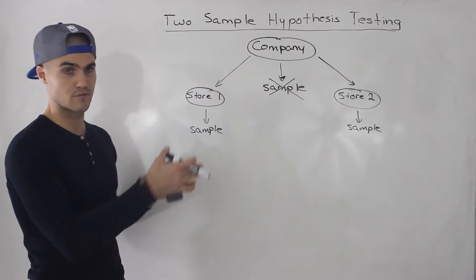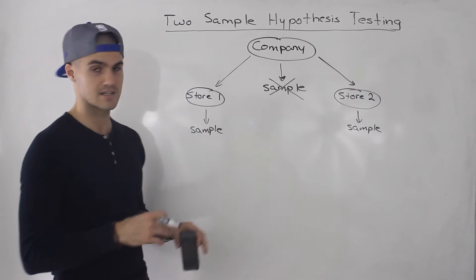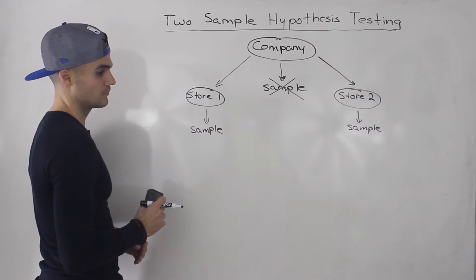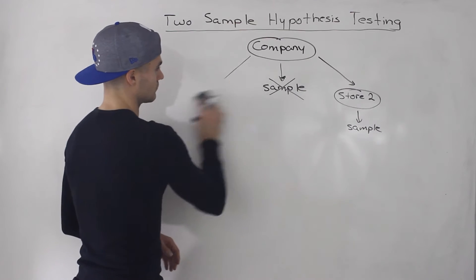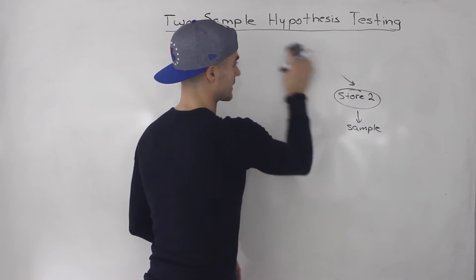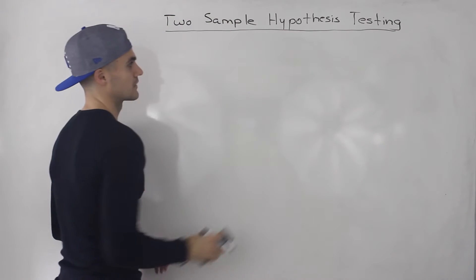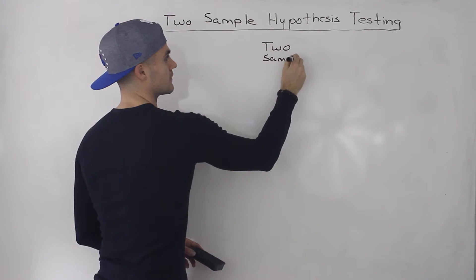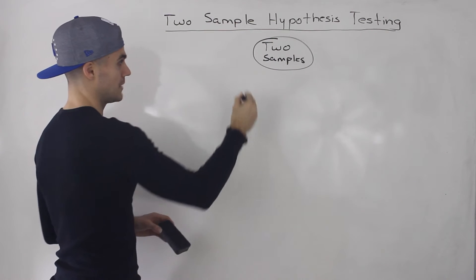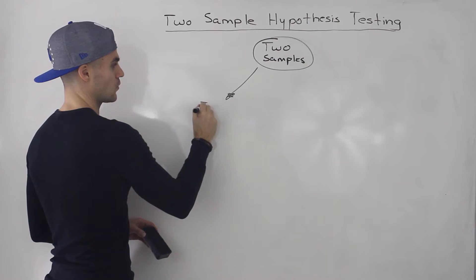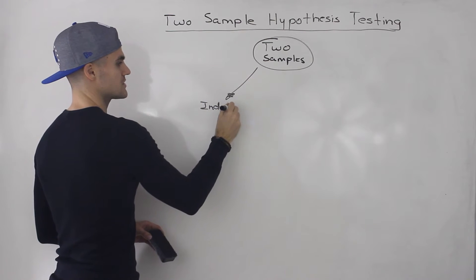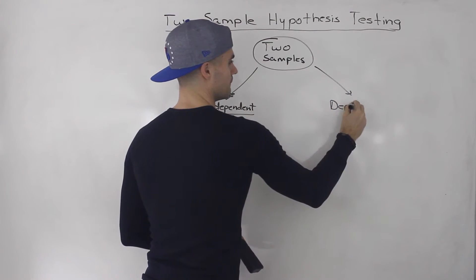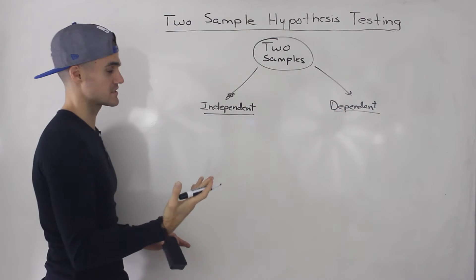That's just a high-level example of how we'll be using two-sample hypothesis testing. We're going to get more technical, but I want to start at a higher level before going further. In the next few videos, we'll be taking our two samples and making a further distinction about them — specifically, whether the two samples are independent or dependent, which will affect the type of hypothesis testing we do.